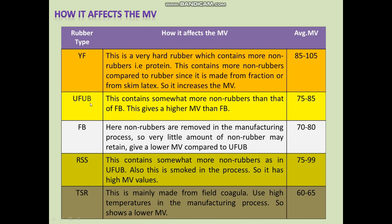Unfractionated unbleached crepe rubber contains somewhat more non-rubbers but can be lower than yellow fraction. However, compared to fractionated bleached crepe rubber, unfractionated unbleached crepe rubber has somewhat higher Mooney viscosity. For fractionated bleached crepe rubber, the non-rubbers are removed during fractionation, so the non-rubber content is very low. Compared to unfractionated unbleached, the fractionated bleached rubber gives somewhat lower average Mooney viscosity values, ranging from 70 to 80.